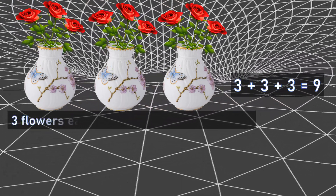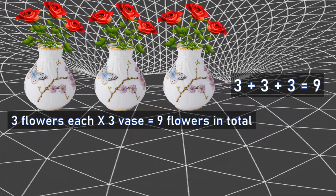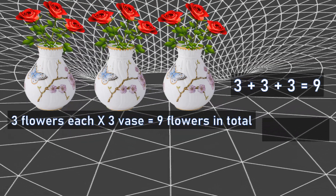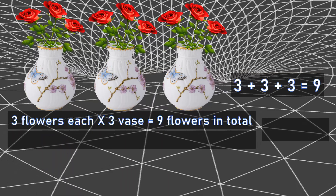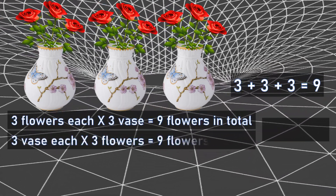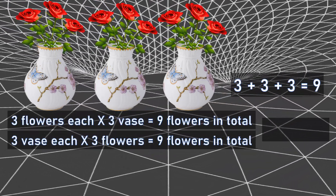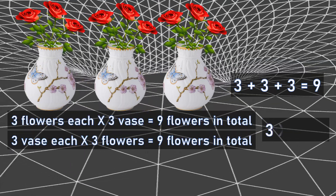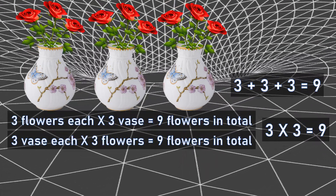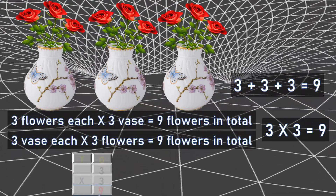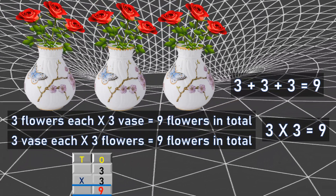So three flowers each into three vases gives nine flowers in total. I have another statement saying the same thing: three vases each have three flowers each, so this gives you nine flowers in total. That means in both cases I will be recalling the three table — three threes are nine. See the concept: three into three is nine.